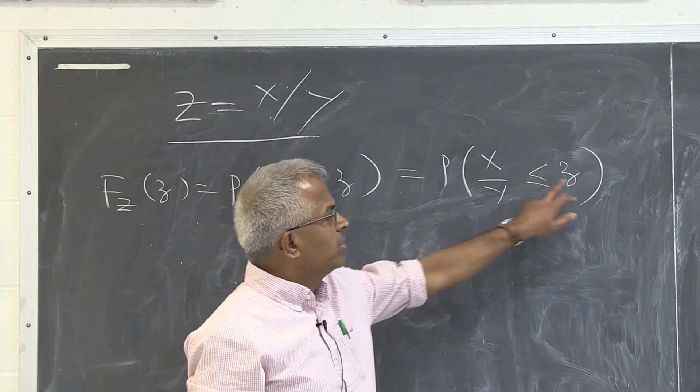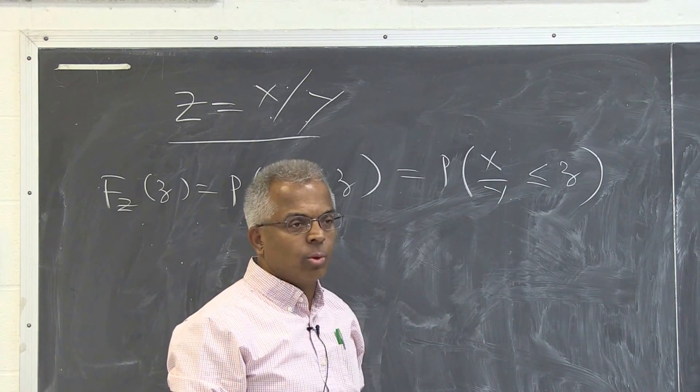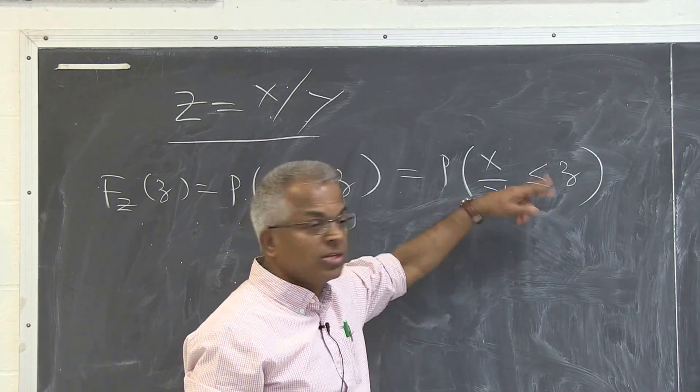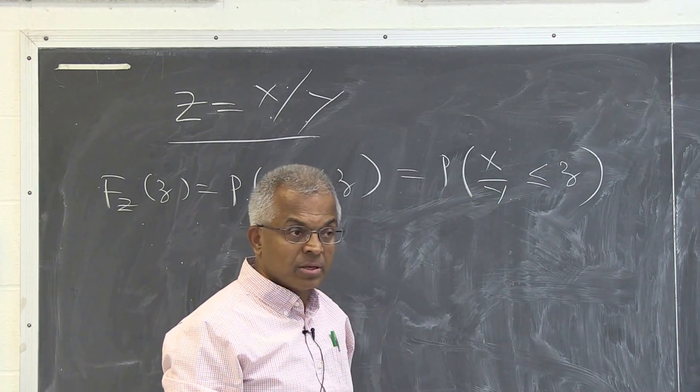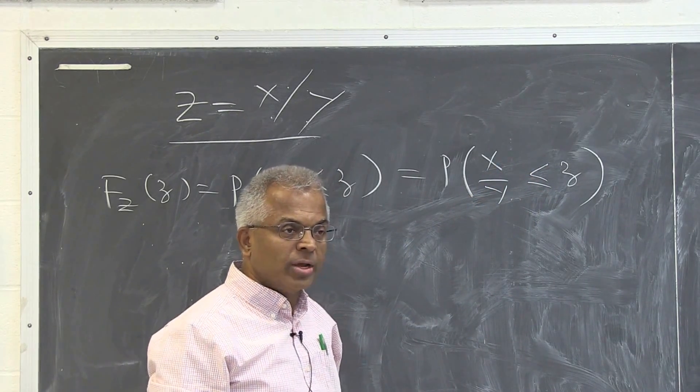So of course, if I can bring this y here, we can write this as x less than or equal to yz. But the problem is, as you know, depending on the sign of the y, this inequality will get flipped. So we have to consider two cases, y positive and y negative.